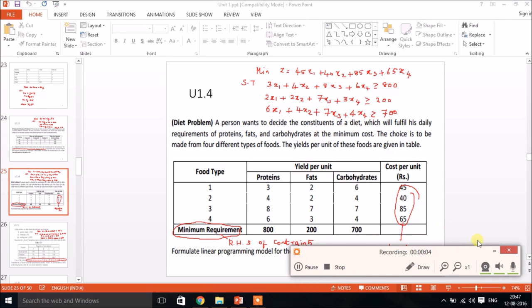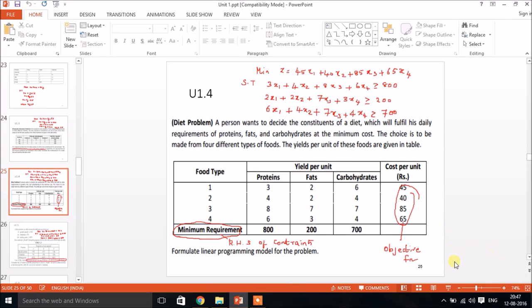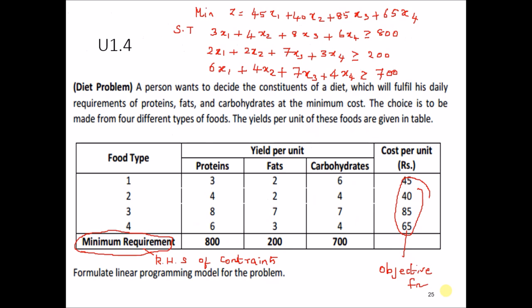In this tutorial, we are going to see some more problems on formulating the linear programming problem. Let's see this problem: a person wants to decide the constituents of a diet which will fulfill his daily requirement of proteins, fat and carbohydrates at the minimum cost. The choice is to be made from four different types of foods. The yield per unit of these foods are given in the table, and we need to formulate this linear programming model.